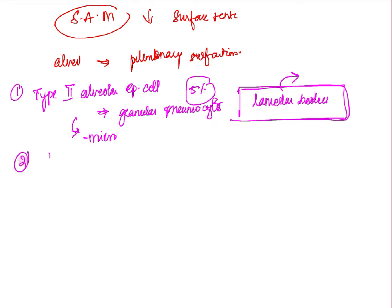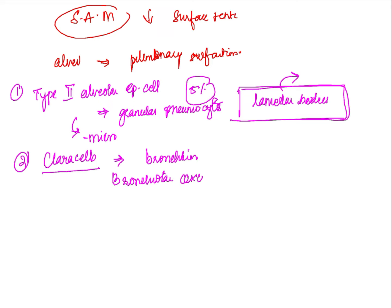The second cell type is the Clara cells, which are situated in the bronchiole. Clara cells are also called bronchiolar exocrine cells.